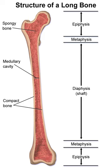Atavistic epiphysis: a bone that is independent phylogenetically but is now fused with another bone. These types of fused bones are called atavistic — for example, the coracoid process of the scapula, which has been fused in humans but is separate in four-legged animals. Os trigonum, the posterior tubercle of the talus, is another example of an atavistic epiphysis.